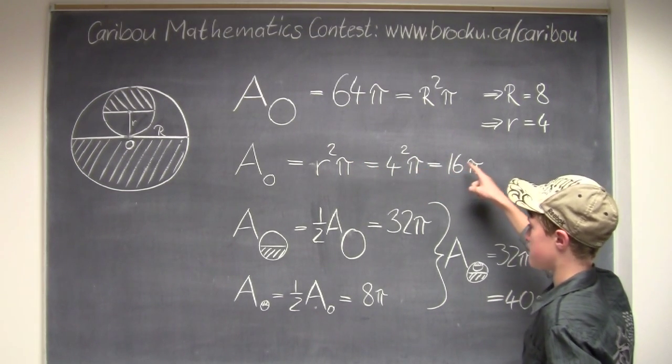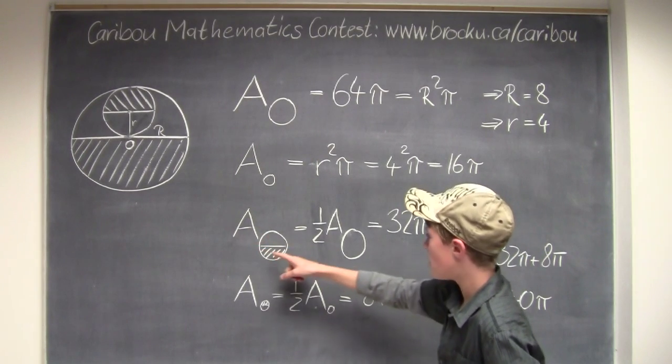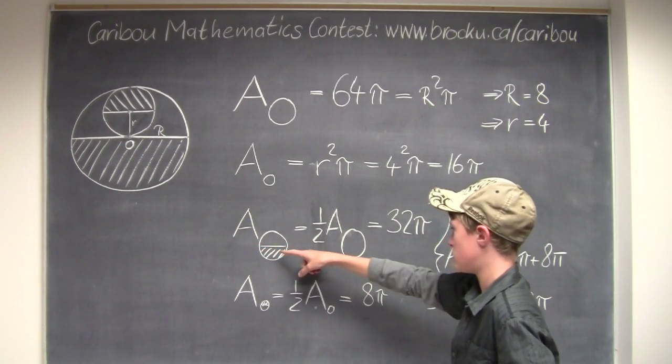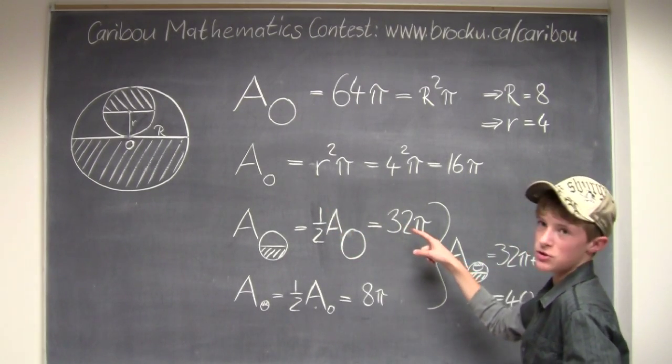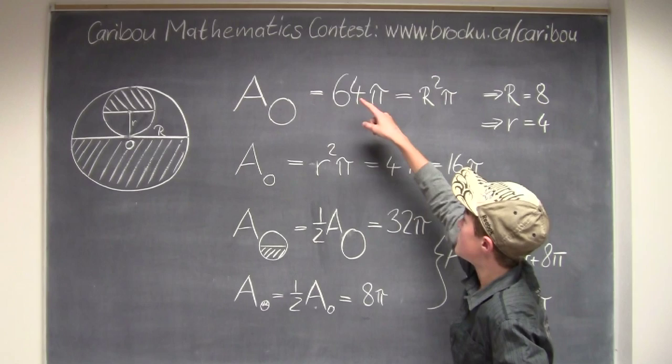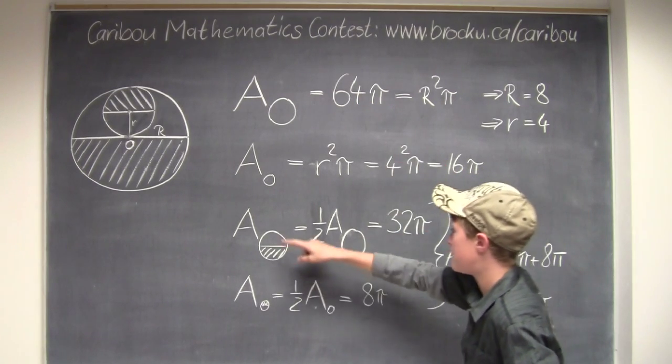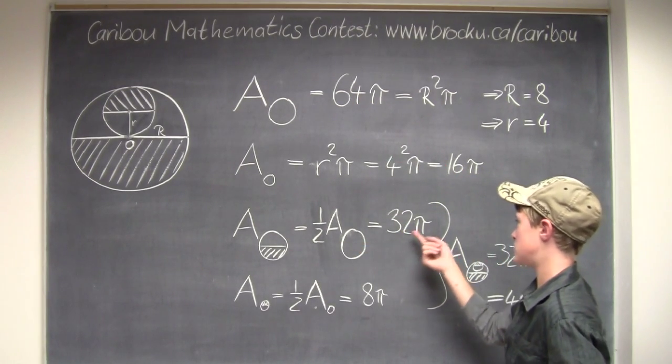The area of the big circle, the shaded region of the big circle, would be half of the area of the big circle, which is 32 times pi, because it would be 64 times pi divided by 2, which would be 32 times pi.